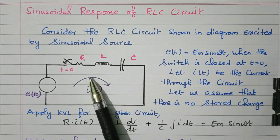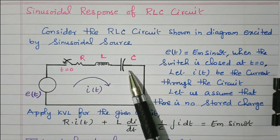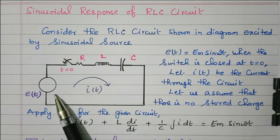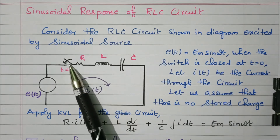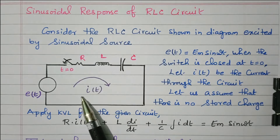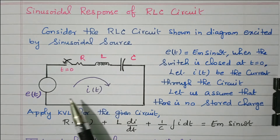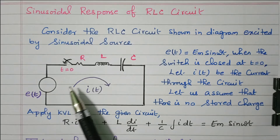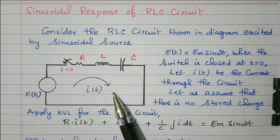Let us consider the RLC circuit — resistor, inductor, and capacitor connected in series — that is excited by the sinusoidal voltage E(T) = Em sin(ωT). The switch is closed at T equal to 0. So I(T) is the transient current. We need to find the response of this transient current while applying the sinusoidal voltage to the RLC circuit.